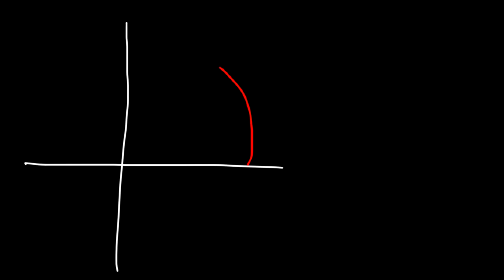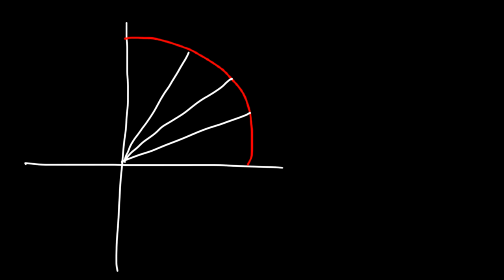Now let's talk about some other common values on a unit circle. I'm going to focus mostly on quadrant 1, because if you know the values in quadrant 1, you can use that to find everything else. There are three common values you need to know: 30, 45, and 60. At a 30 degree angle, the x value is root 3 over 2, and the y value is 1 over 2.